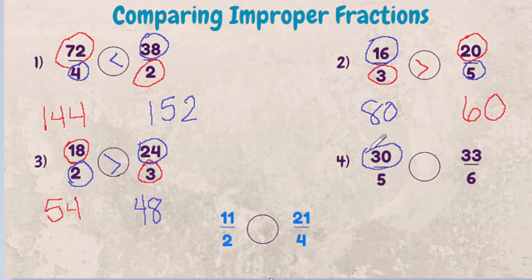So let's multiply 30 times 6 and we get 180, and let's multiply 5 times 33 and we get 165. 180 is greater than 165, so 30 fifths is greater than 33 sixths.